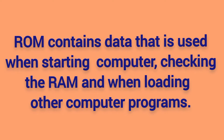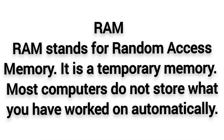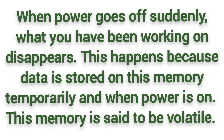ROM contains data that is used when starting a computer, checking the system, and when running other computer programs. Now let's talk about RAM. RAM stands for Random Access Memory. It is a temporary memory. Most computers do not store what you have worked on automatically. When power goes off suddenly, what you have been working on disappears, because the data is stored on the memory temporarily. When power goes off, the memory is said to be volatile.